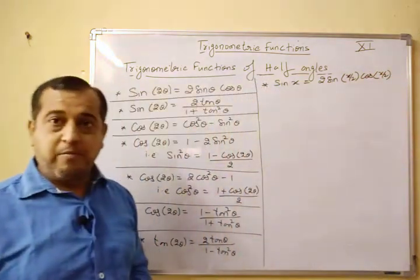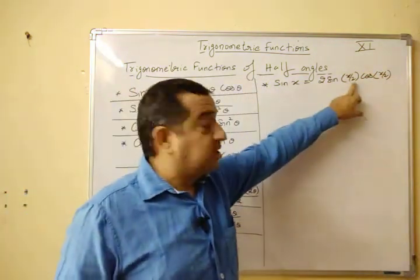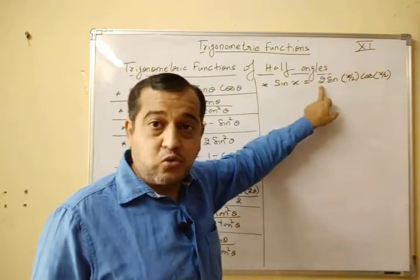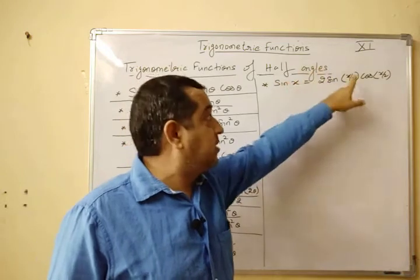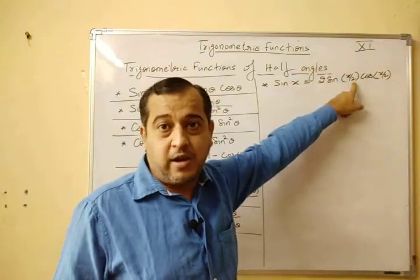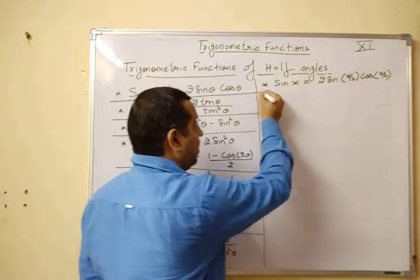And remember, this x by 2, this 2 will not cancel with this 2. Why? Because this 2 is algebraic remaining outside and this 2 is inside the angle. So this will not cancel at all.